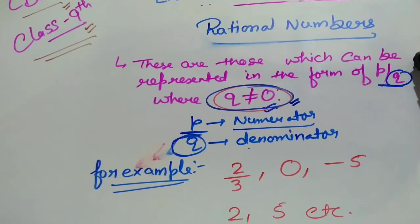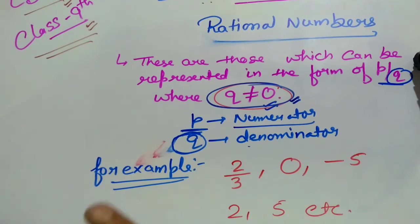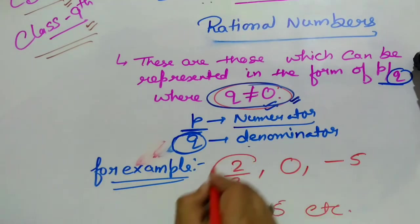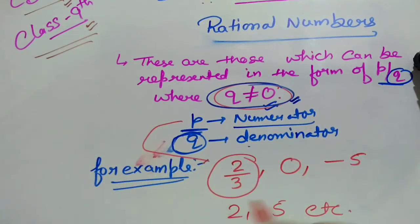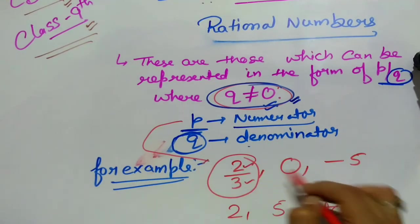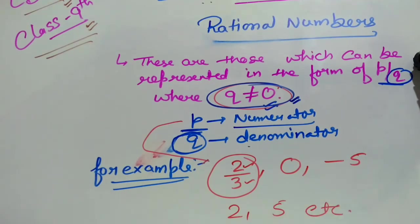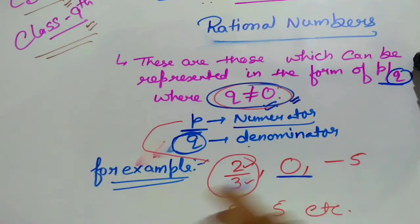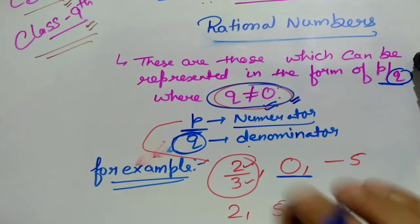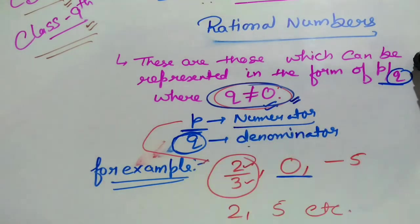Okay, these are all examples — we will see the rational numbers. This is the P upon Q form. Now, if you speak of 0 — 0 doesn't have any issue because 0 can be divided by any number; if you divide any number into 0, the answer is 0. So 0 below the denominator — we can write 0 as 0/1, 0/2, 0/3, 0/minus 5. So 0 is also a rational number.